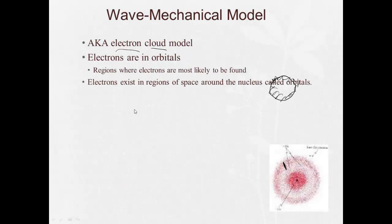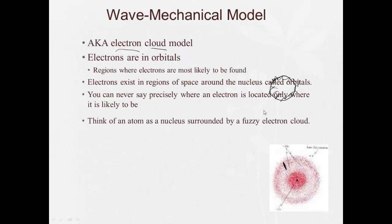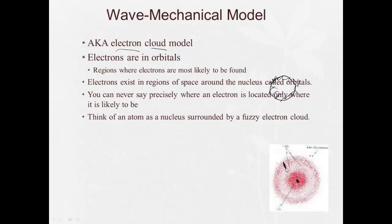So the electrons exist in regions of space around the nucleus called orbitals. And you can never say precisely where an electron is located, only where it is likely to be. So the way to think of it is an electron is a nucleus, right here in the middle, surrounded by this fuzzy electron clouds, where there are some places where the electrons are more likely to be, others where it's less likely to be.